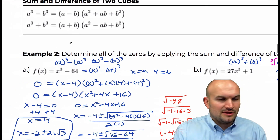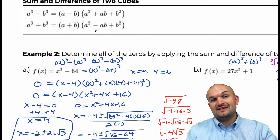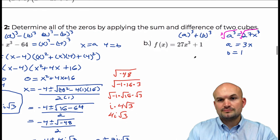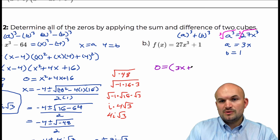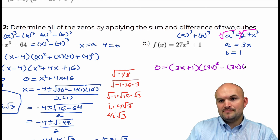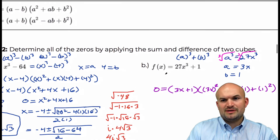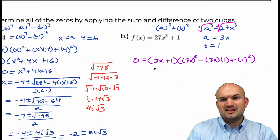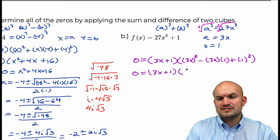Applying the sum of two cubes formula: you have the binomial a plus b, and then a squared minus a times b plus b squared. We're finding the zeros, so 0 equals 3x plus 1, times a squared — make sure you square both the 3 and the x — minus a times b, plus b squared. For those not as familiar with the sum of two cubes, let's simplify that one more time.